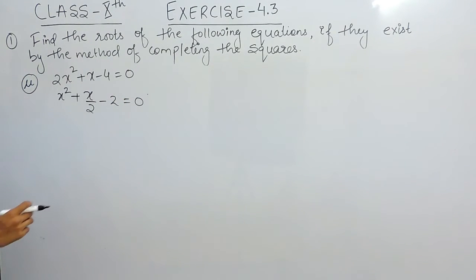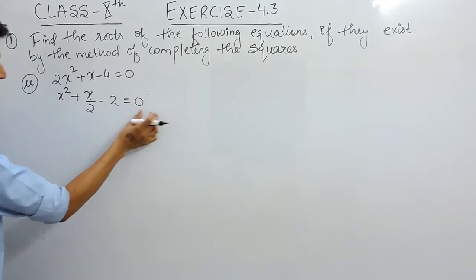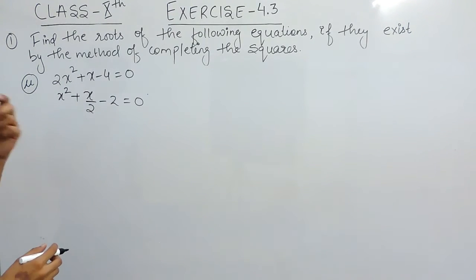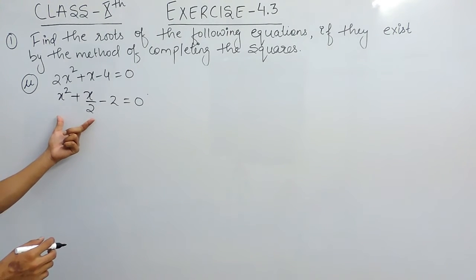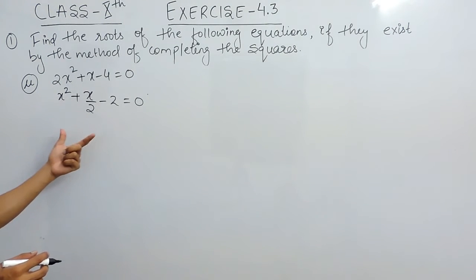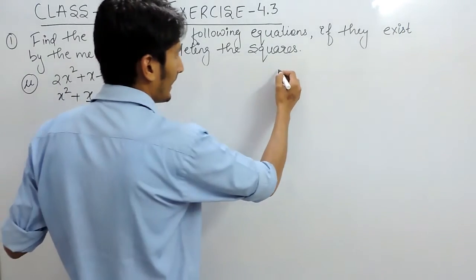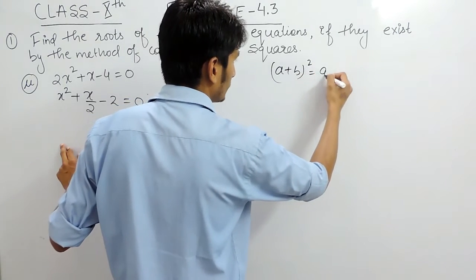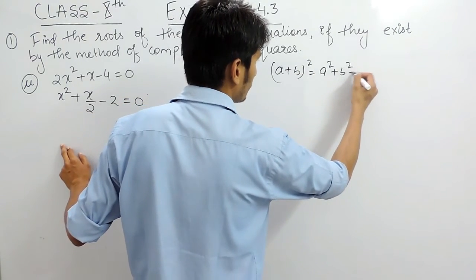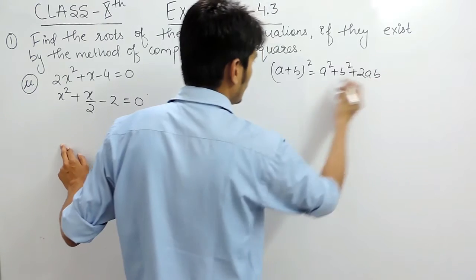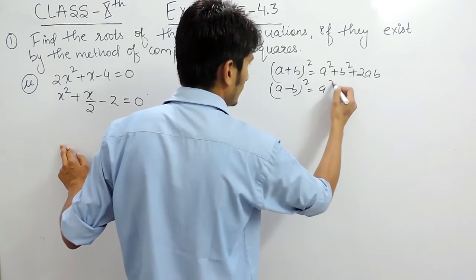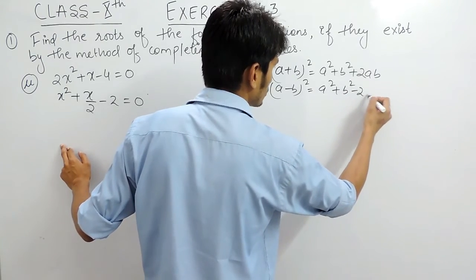Now either we can shift this constant to this side or we can simply solve it. We have two formulas. First, (a + b)² = a² + b² + 2ab. Second, (a − b)² = a² + b² − 2ab.